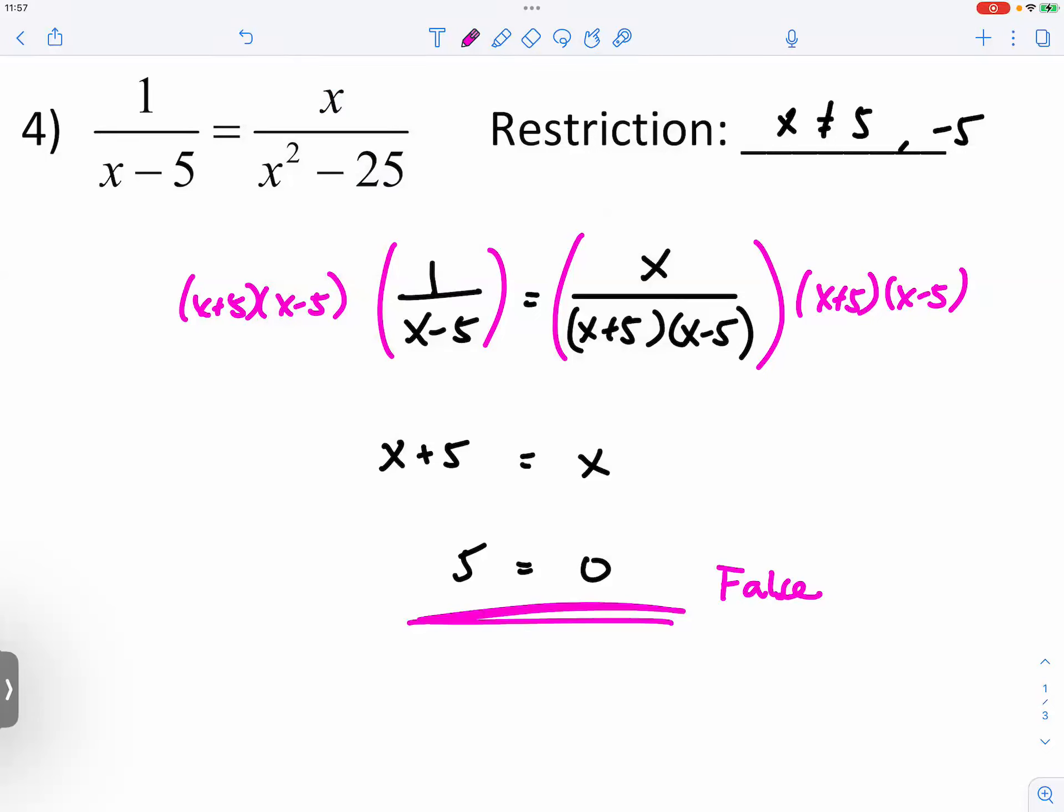And that means it doesn't matter what x value is - since you don't see x anymore and it resulted in a false statement, that means there is no solution. No x value would ever make this statement true, because 5 equals 0 is inherently false. So it doesn't matter what you do, it is going to be false. That's the key right here.